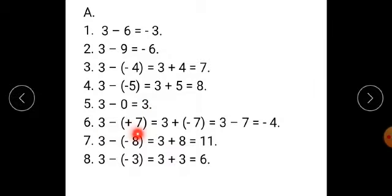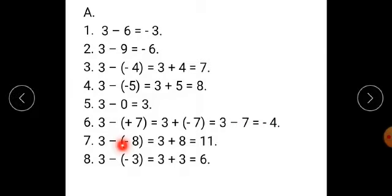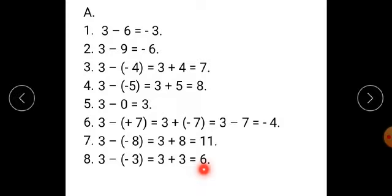3 minus plus 7 equals 3 minus 7 — signs are different, so 7 minus 3 gives 4, sign of the bigger number, therefore minus 4. 3 minus minus 8 equals 3 plus 8 equals 11. And last: 3 minus minus 3 — add the opposite of minus 3, which is plus 3, so 3 plus 3 equals 6.